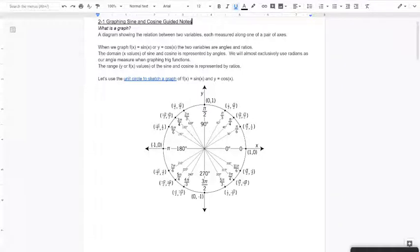So when we graph sine of x or cosine of x, and I wrote there f of x equals the sine of x or y equals the cosine of x because you can use f of x or y to represent the range, but x is the domain. There's two variables, angles and ratios. So what you plug in is the angle, and what you get out is the ratio.